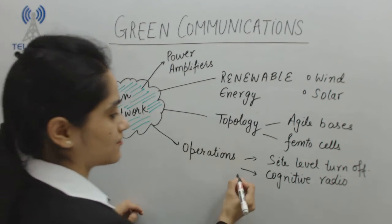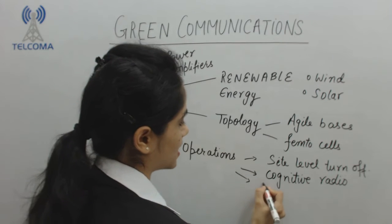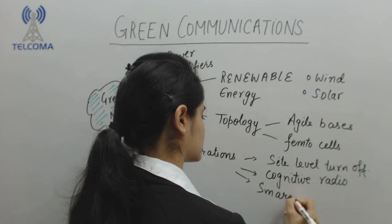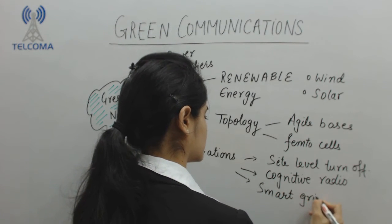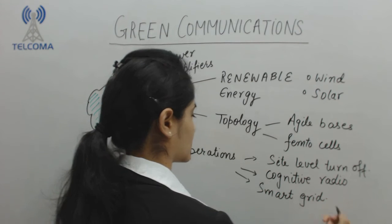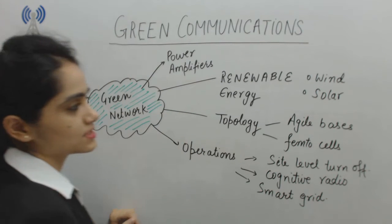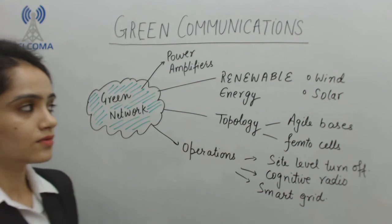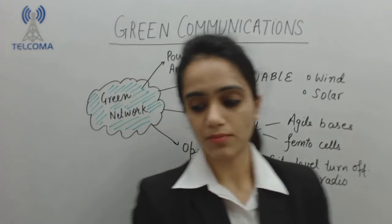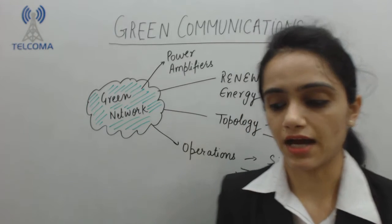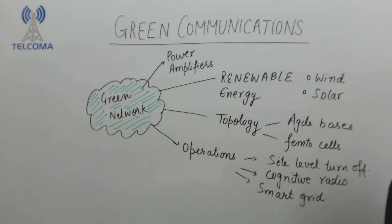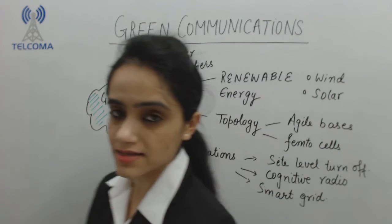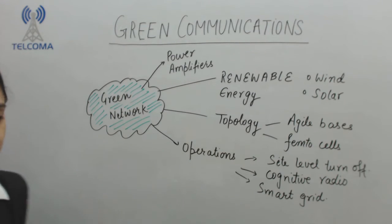We use the concept of cognitive radio, which means saving the spectrum. We also have the concept of a smart grid, which is electricity-based. Next in operations, we have MAC — medium access control.